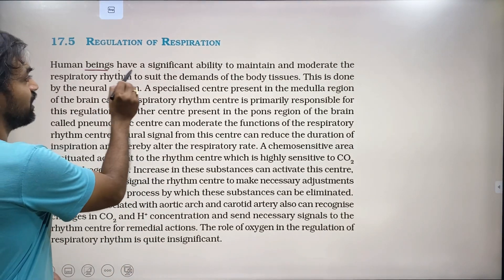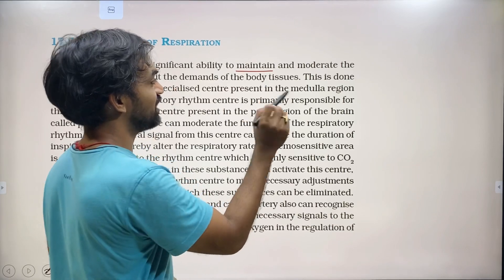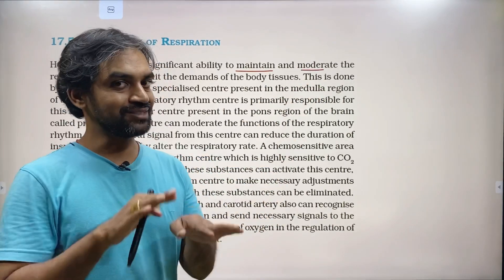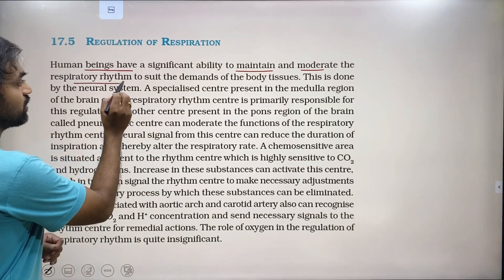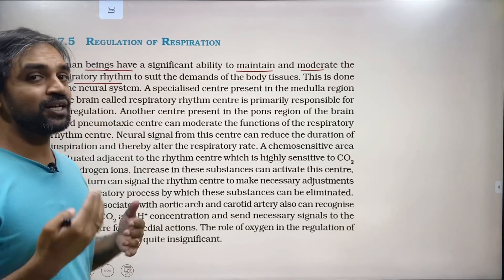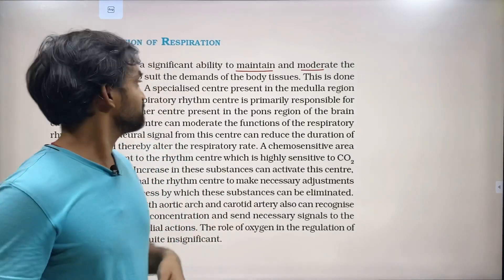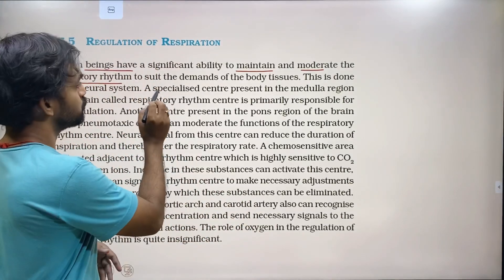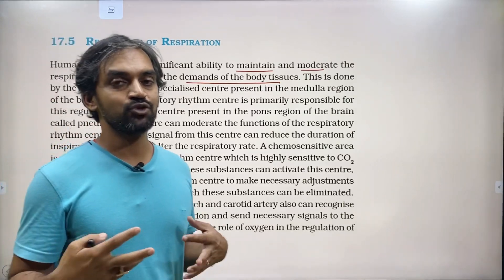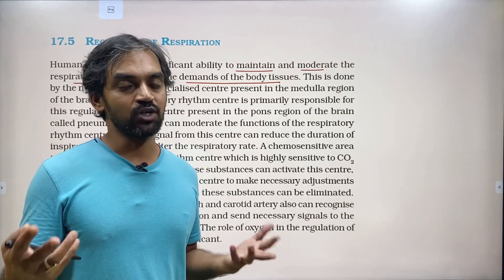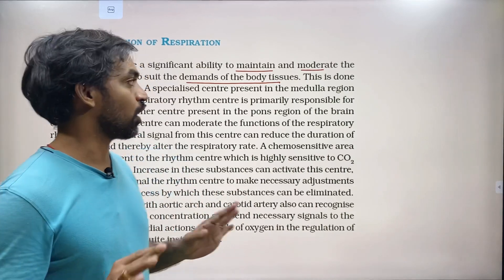Human beings have a significant ability to maintain and moderate — that is, adjust — the respiratory rhythm. The respiratory rhythm includes inspiration, expiration, and the rate, adjusted to suit the demands of the body tissues. Sometimes body tissues need more oxygen; this adjustment is called moderation.